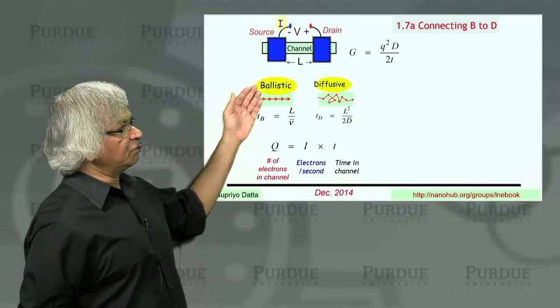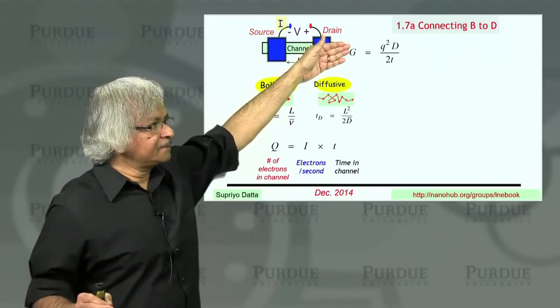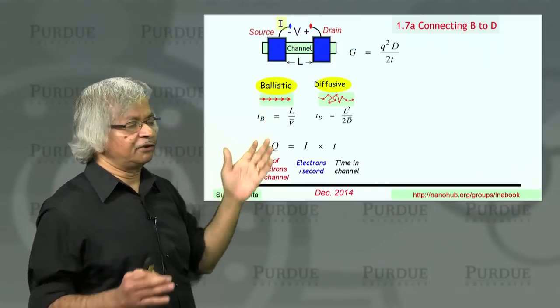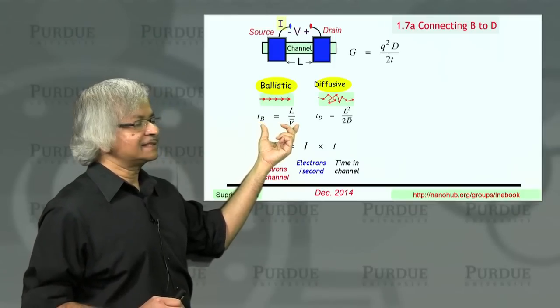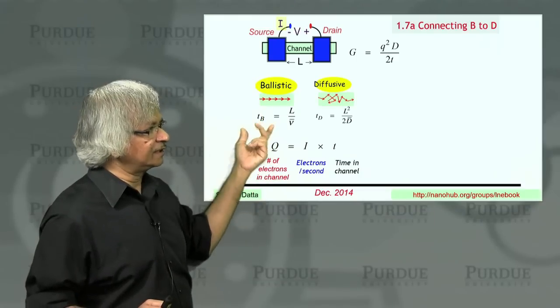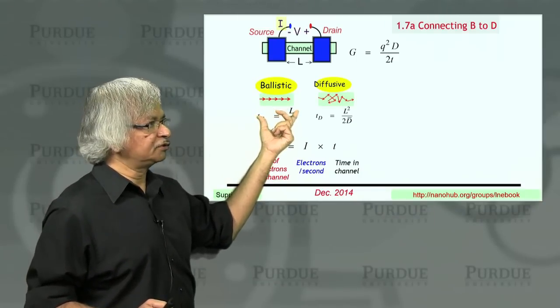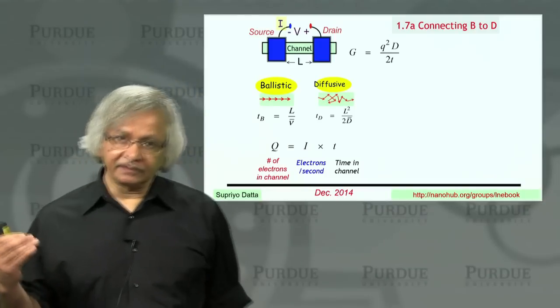Our objective is to connect this ballistic and diffusive conductance that we talked about in the last two lectures. Starting from our general expression for conductance, you can obtain an expression for ballistic or diffusive conductance using this expression for the time. The basic difference is in the ballistic limit, the time is proportional to the length. In the diffusive limit, the time is proportional to length squared.